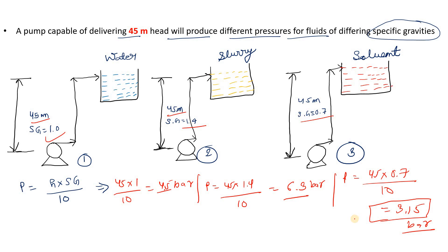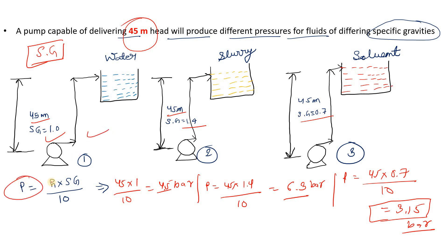I hope you are able to understand. Basically there is one pump whose head is constant at 45 meters. When you change the fluid, its density or specific gravity changes, and that's why the pressure changes.